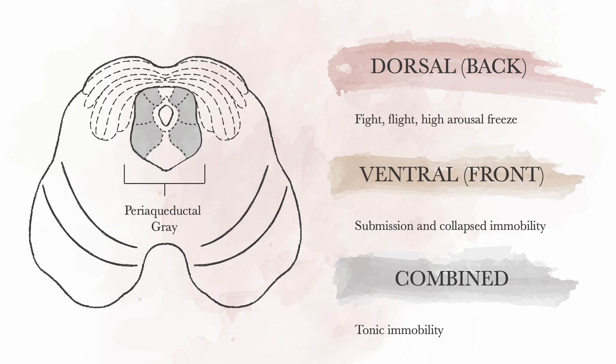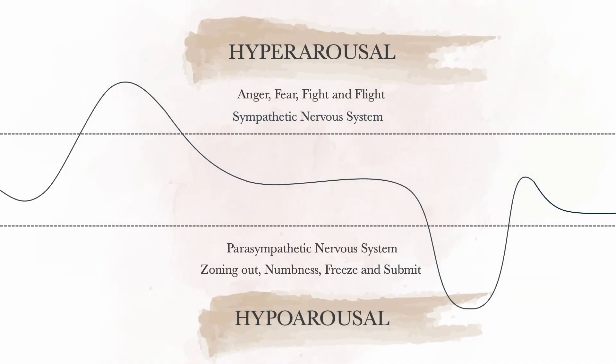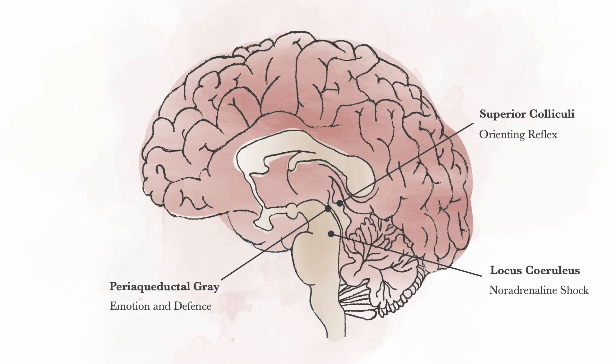I cover various types of freeze as well as dissociative responses in the following videos of this series. Both freeze responses and dissociative symptoms are typically associated with hypoarousal states in the window of tolerance model we started with. However, we will instead be looking at the involvement of the brainstem.